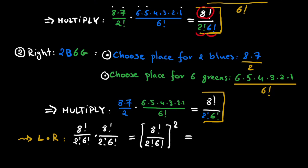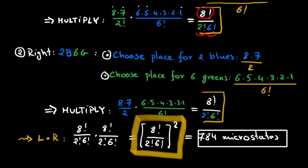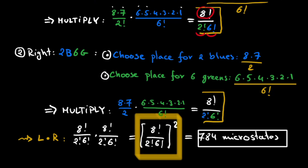This comes out to be 784 different arrangements or different microstates. The form of this formula can be used for any scenario: 8 factorial in the numerator is the number of spots on each side, the 2 is the number of atoms of different color on each side, and the 6 is the total number of atoms of each color minus 2.